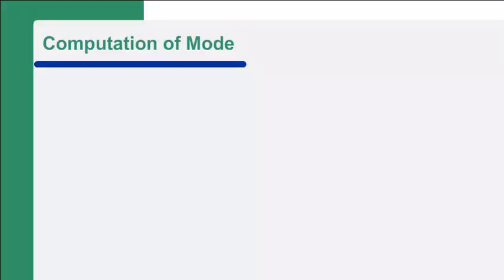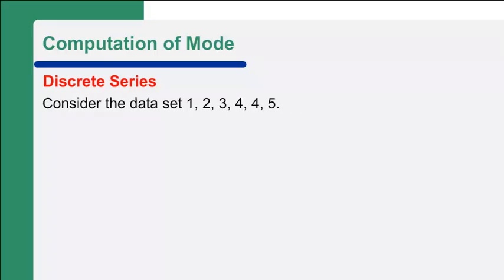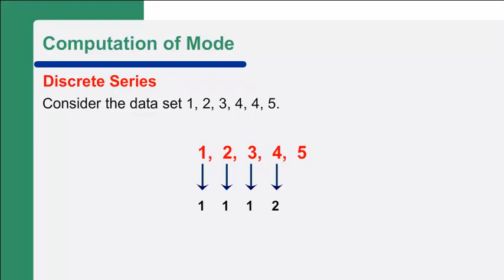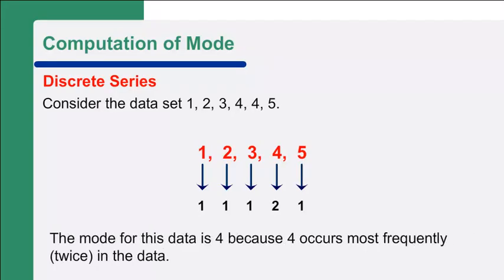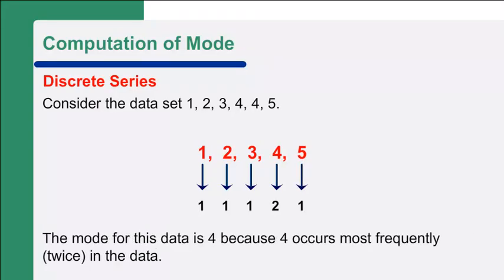Computation of mode — Discrete series: Consider the data set 1, 2, 3, 4, 4, 5. The mode is 4 because 4 occurs most frequently, appearing twice in the data.